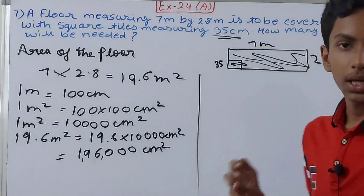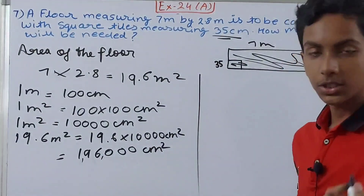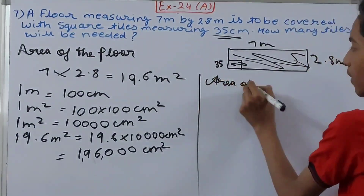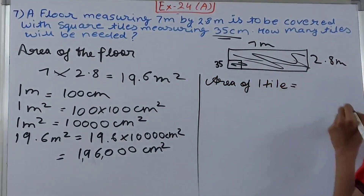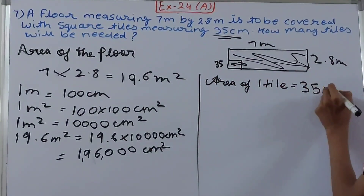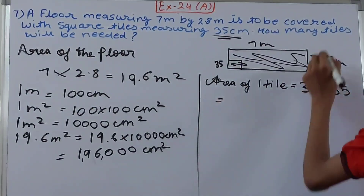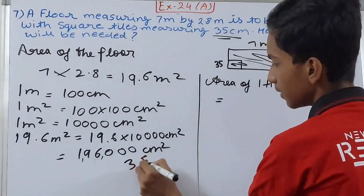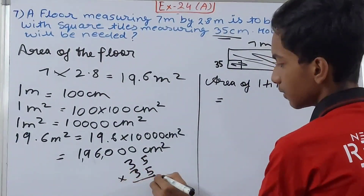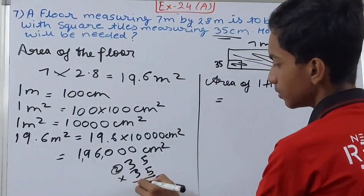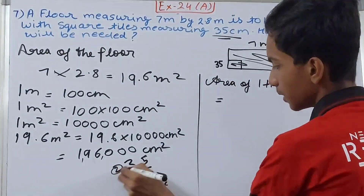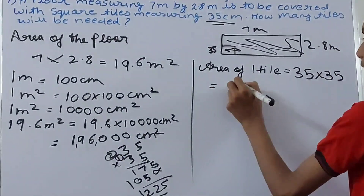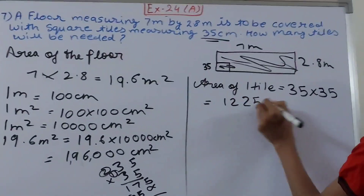The second thing we need to find is the area of one tile. Area of one tile equals 35 into 35. Let's do the multiplication: 35 into 35 gives us 1,225. So the area of one tile is 1,225 square centimeters.